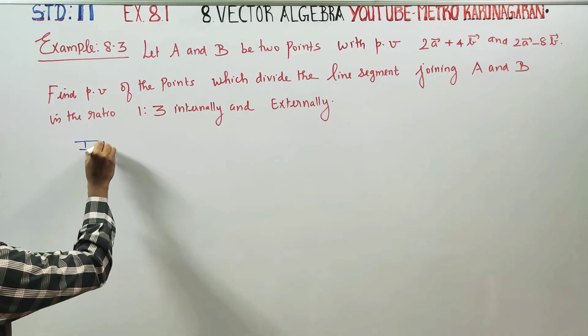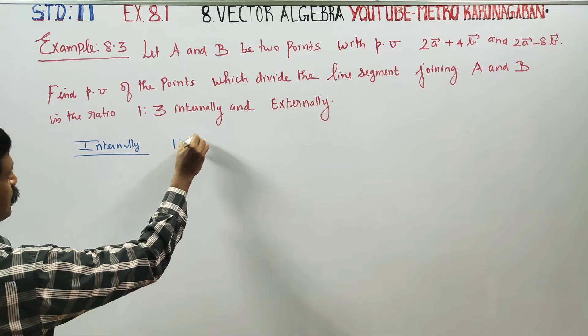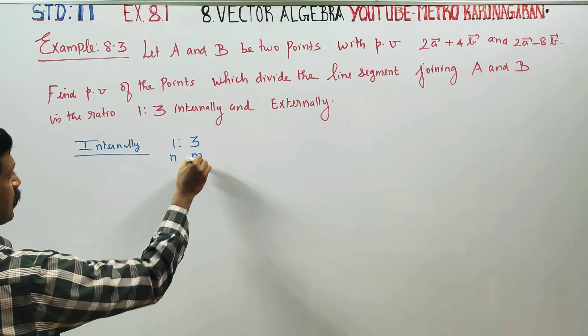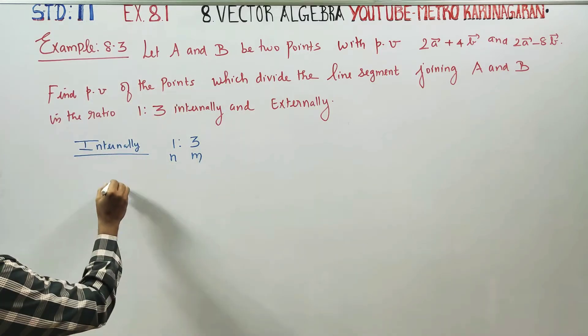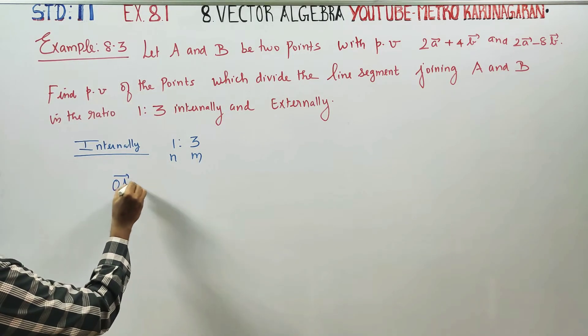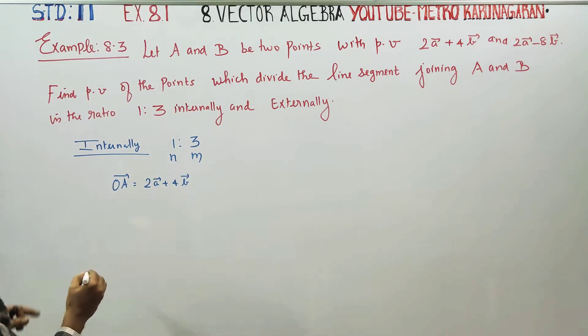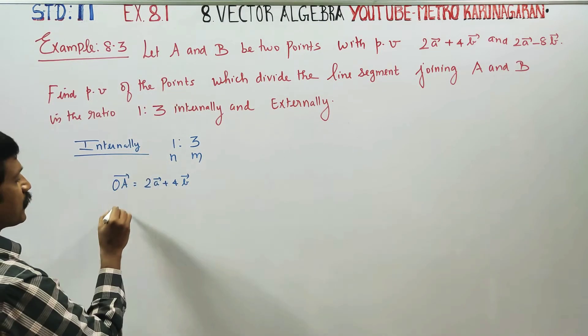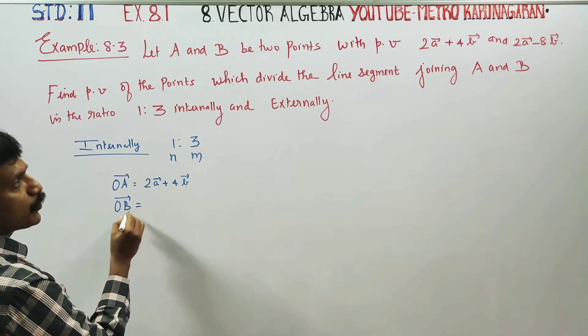First, internally. The ratio is 1 is to 3. Position vector of B, position vector of O, origin, reference, OB vector, position vector.